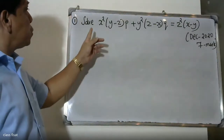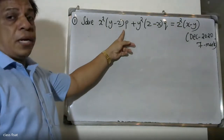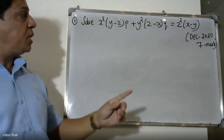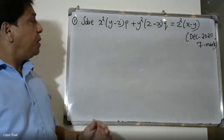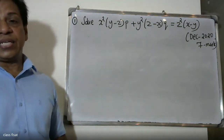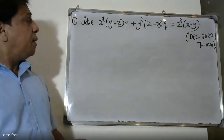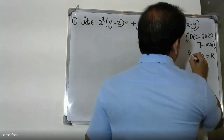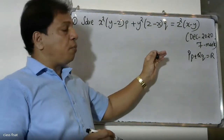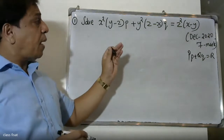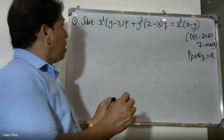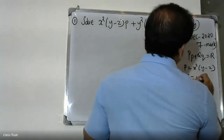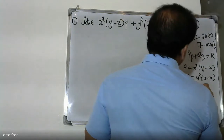Good morning students. The question is: x squared into (y minus z) times p, plus y squared into (z minus x) times q, equals z squared into (x minus y). This is a KTU question. We use Lagrange's linear equation for first order PDEs, where P, Q, R are functions of x, y, z. Here P equals x squared into (y minus z), Q equals y squared into (z minus x), and R equals z squared into (x minus y).